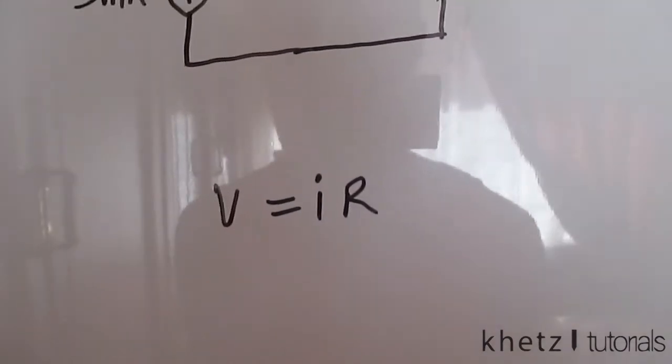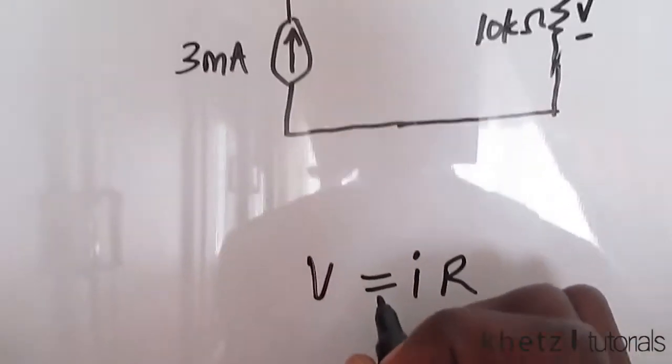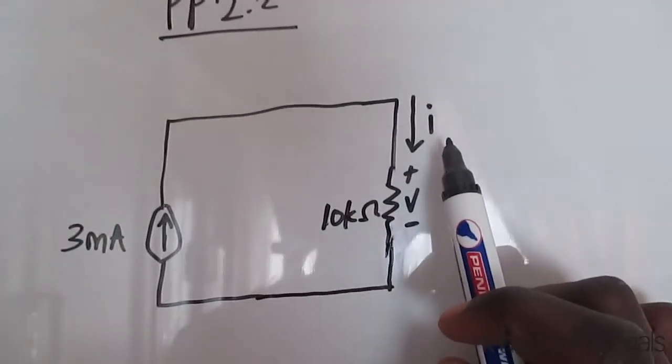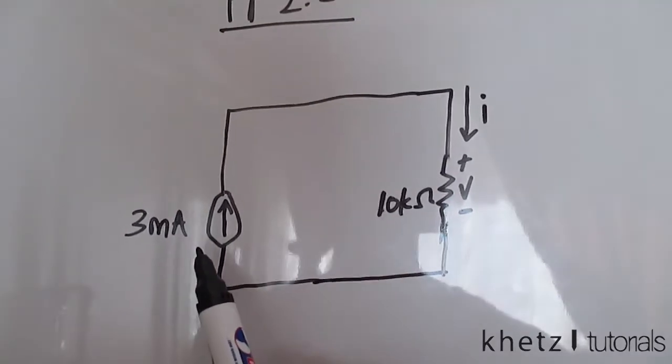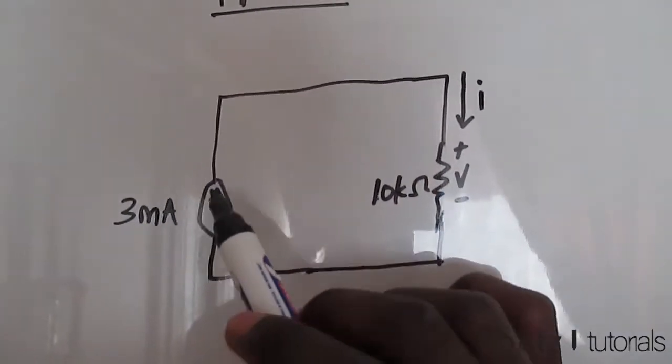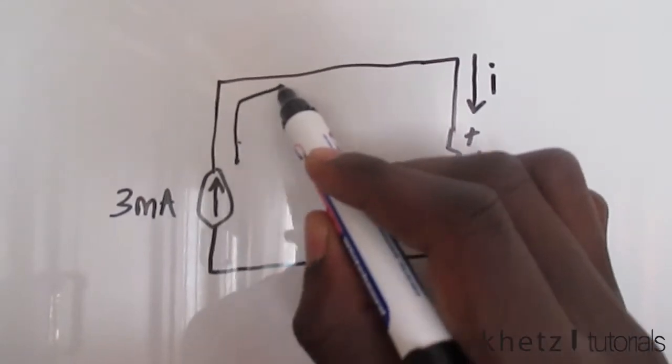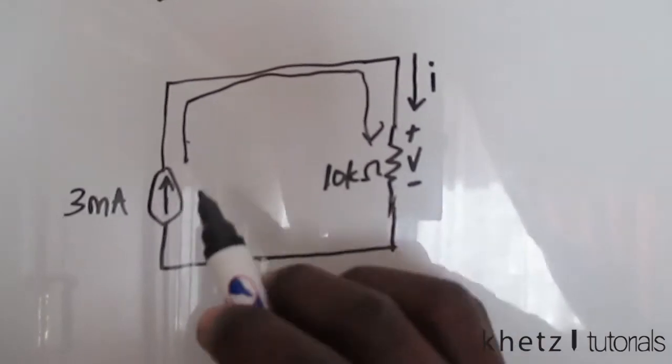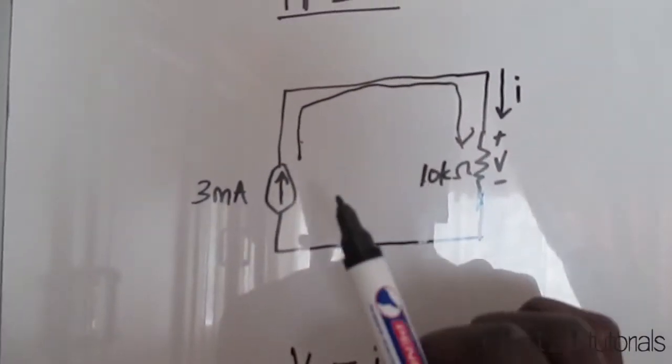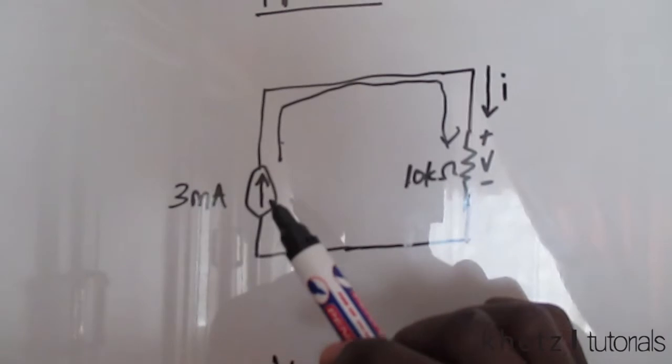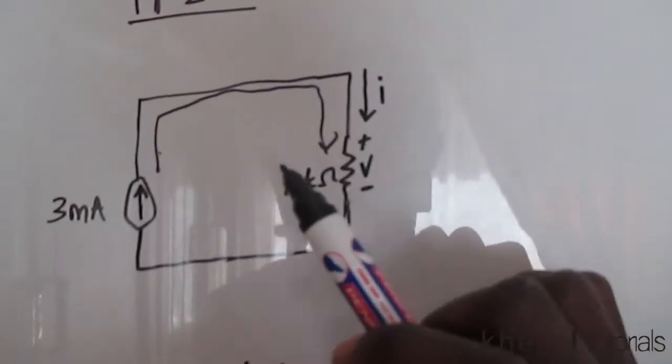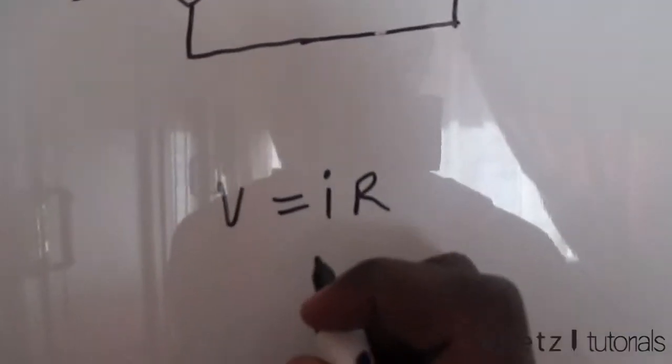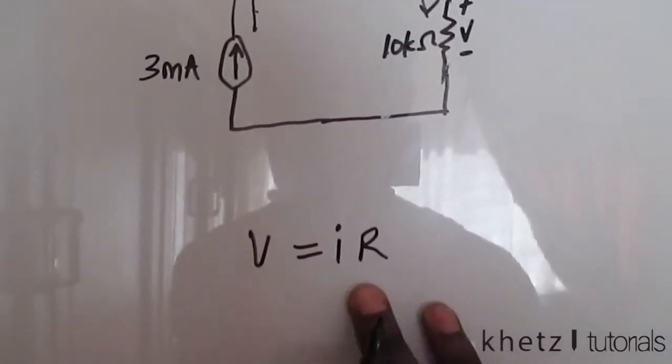We are given the current. This current source, its value is the same as i because this current source is in series with this resistor. So this current flows all the way, passes through this element, and just like that. This is the only current present in this circuit. So that is the value of i in this formula as we are calculating the voltage.